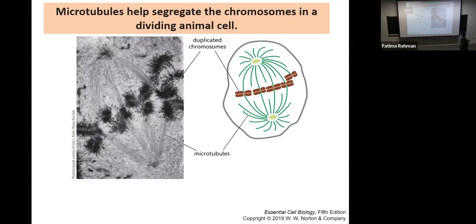Microtubules are what help segregate chromosomes in a dividing cell. They are one particular type of cytoskeletal structure, and they help all the chromosomes line up perfectly on the metaphase plate and then divide. Each microtubule holds on to one chromosome to ensure they're divided properly. This is true for both plant and animal cells, though the process differs later due to the presence or absence of the cell wall.